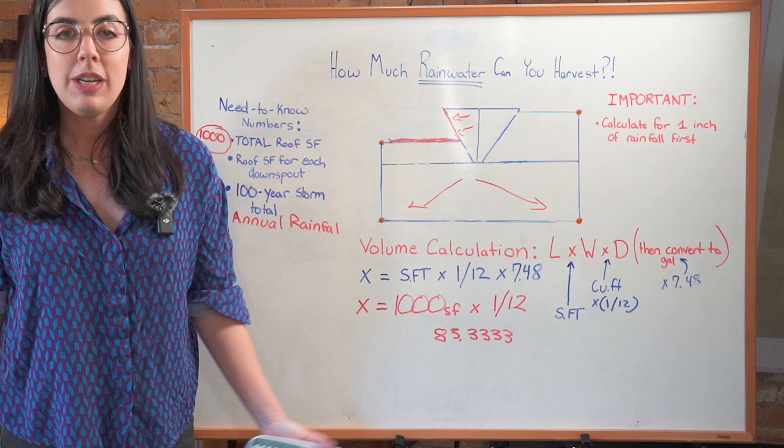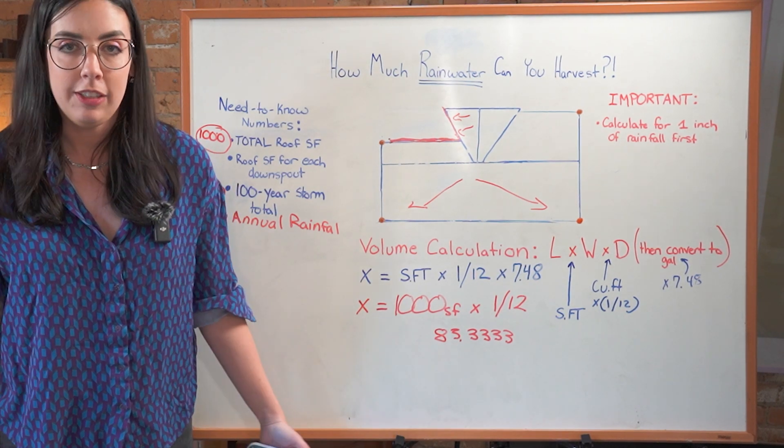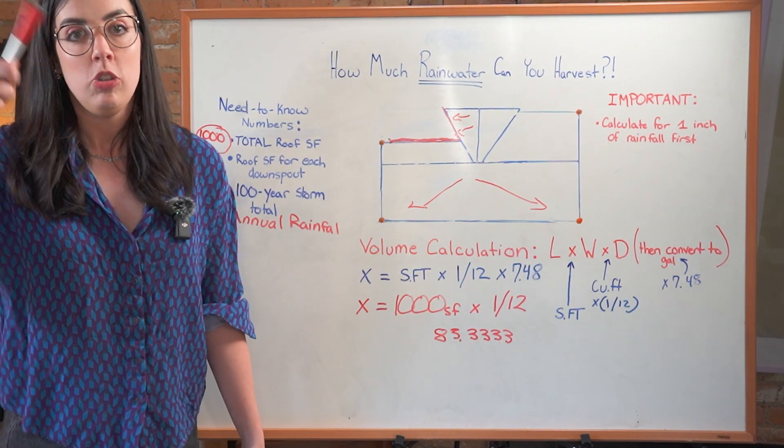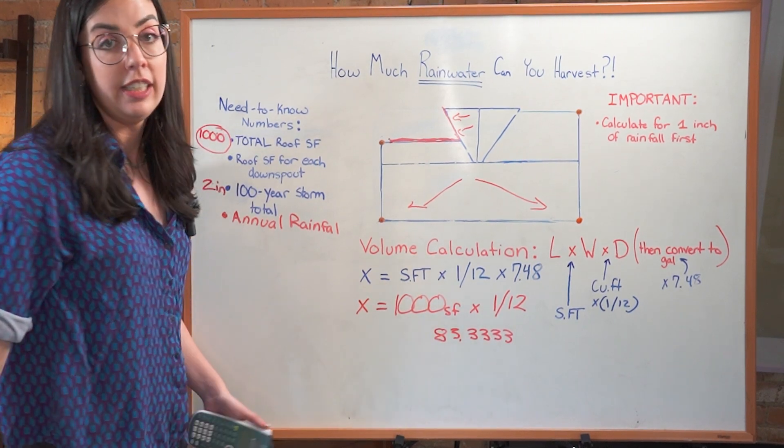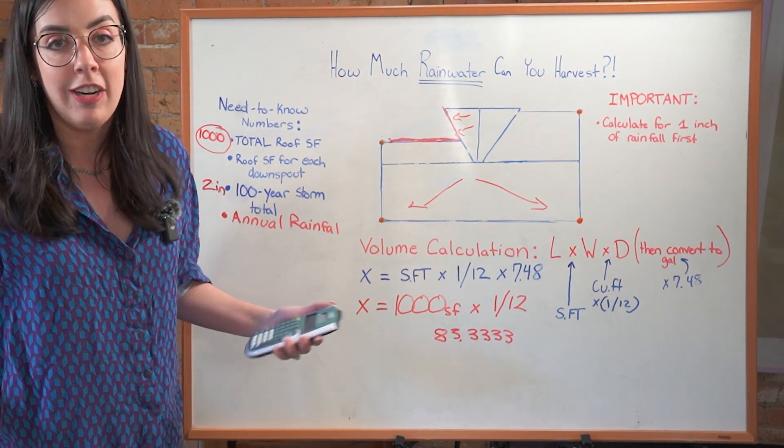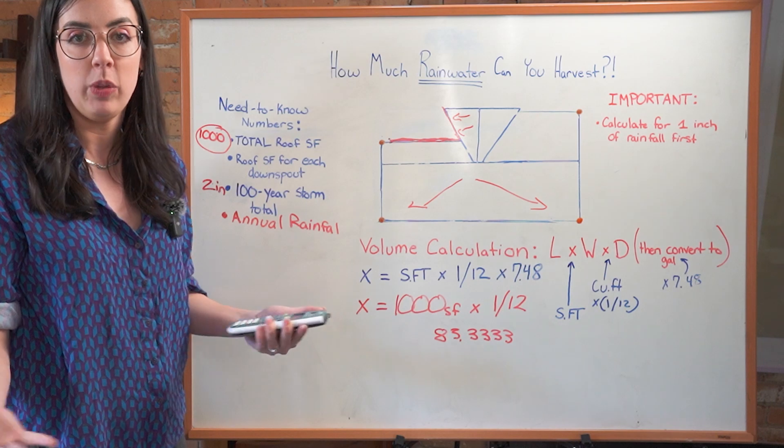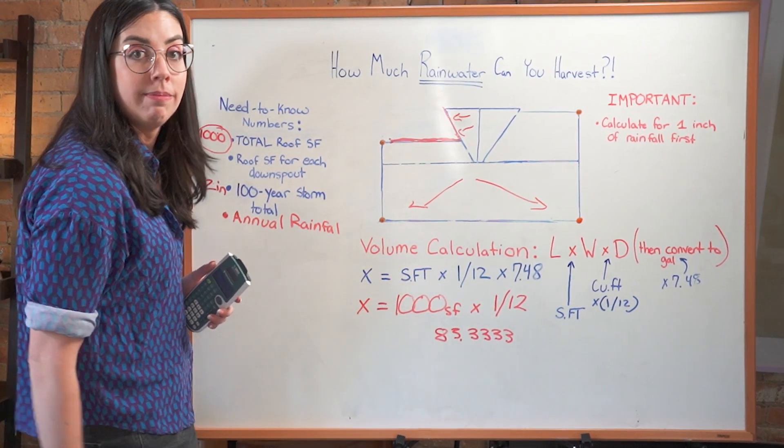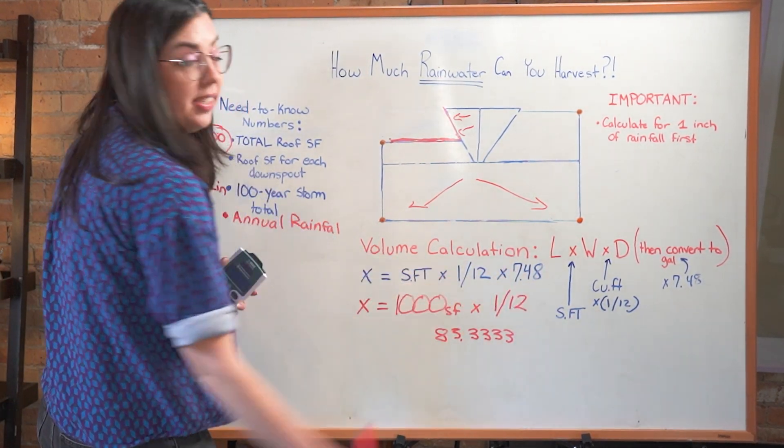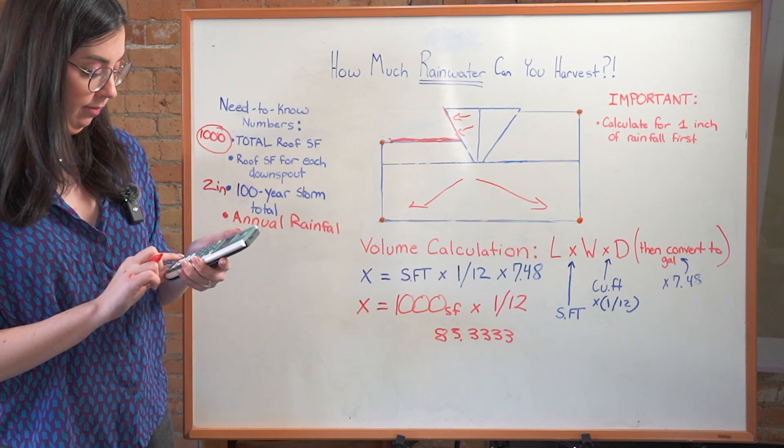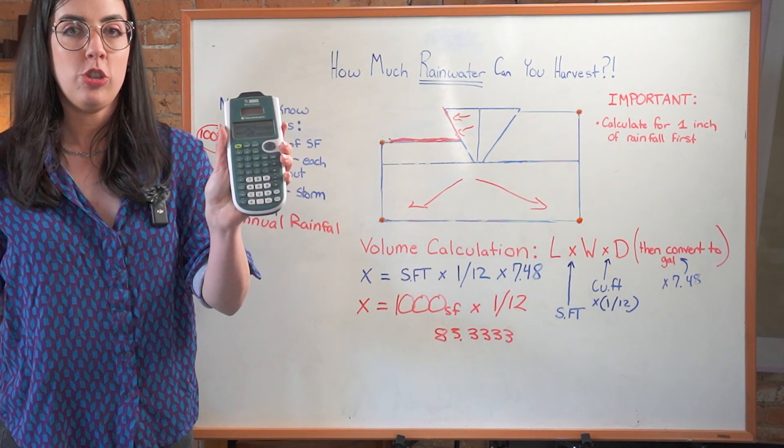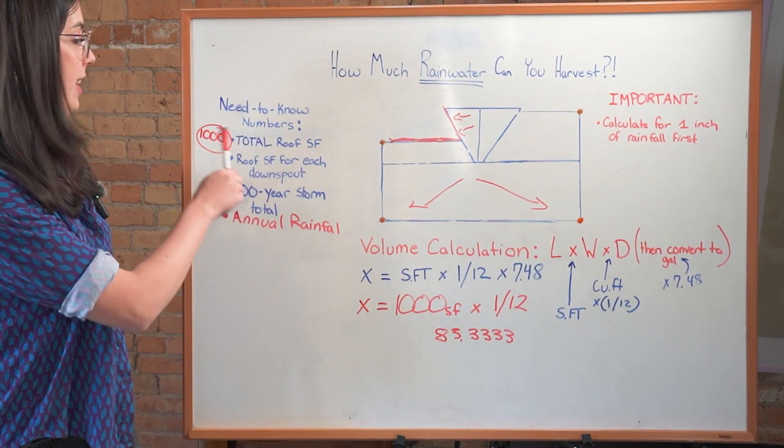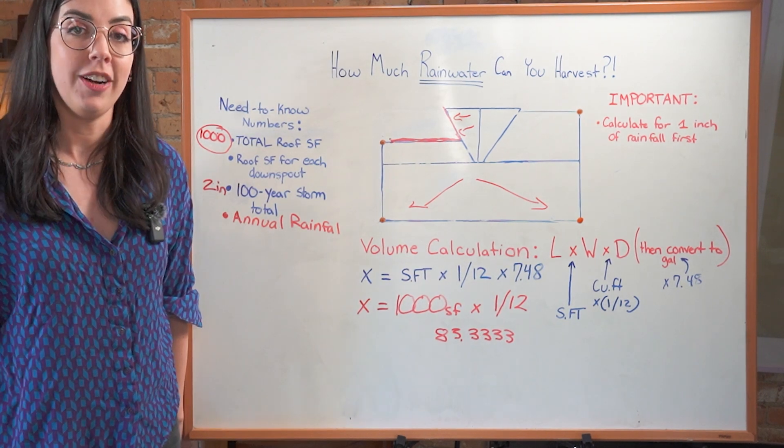Now, 83.333 cubic feet means nothing to most Americans. And so converting it to gallons, the only reason we're doing that is that it makes it easier for our monkey brains to conceptualize. You could do all of your calculations here if you wanted to, but gallons, it's just easier. And also, if you're shopping for rain tanks and so on, you're typically shopping with a gallon capacity in mind. There are 7.48 gallons in a cubic foot. So all we're doing is taking this number and multiplying it by 7.48. That's it. 623 gallons. And I usually end up rounding down on this, and I just say every 1000 square feet of roof can harvest 600 gallons of water per inch of rain.